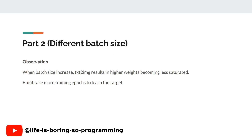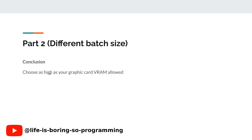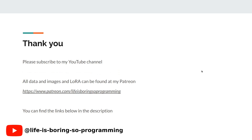For the observation, we can see that when batch size increases, the results of text images at higher weight become less saturated. But we need more epochs to train the LoRA. In conclusion, I will choose as high a batch size as my graphics card supports. If you enjoyed this video and want to learn more about stable diffusion and LoRA training, make sure to subscribe. I will put up the other experiments soon. You can also find all the models and images in my Patreon account — the link can be found in the description. Thank you and see you in the next video.